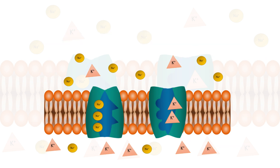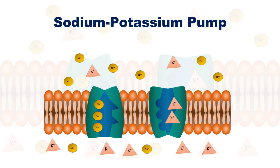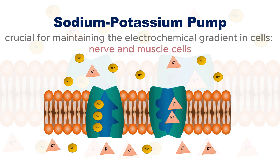First, let's look at one of the most well-known examples of active transport: the sodium-potassium pump. This pump is crucial for maintaining the electrochemical gradient in cells, especially in nerve and muscle cells.